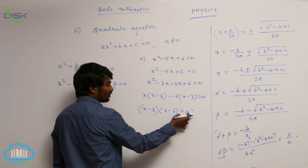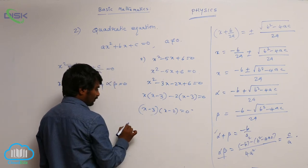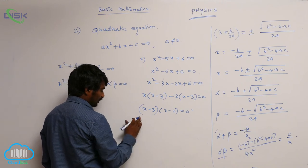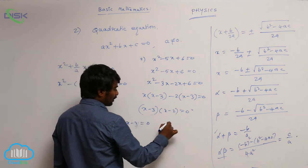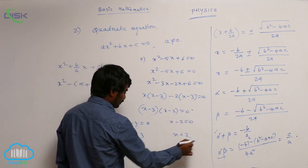So the product of these two terms will be 0 that means it may be 0 or this may be 0. So x minus 3 is equal to 0 or x minus 2 is equal to 0. That means x is equal to 3 x is equal to 2.